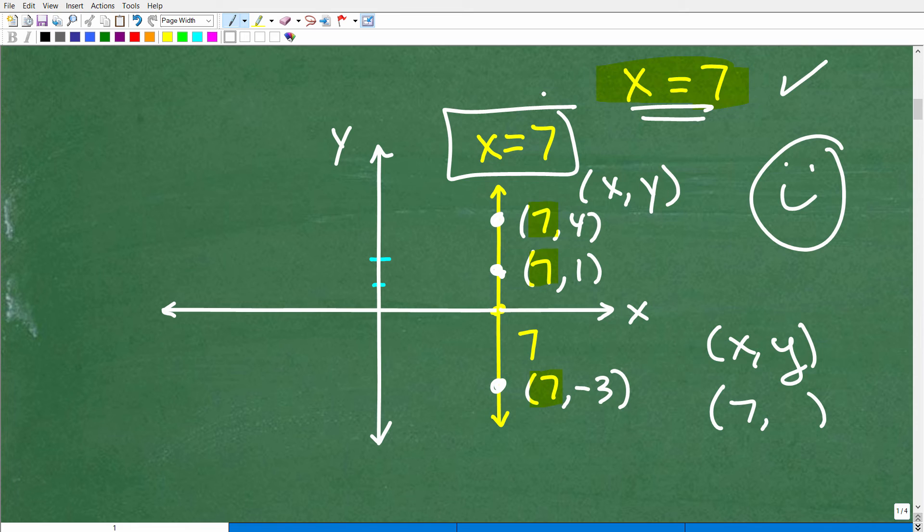But, again, these x equals, y equals lines here are easy to confuse. So let me ask you another question, okay, in contrast to our other line. Let's go ahead and put that back up. So y is equal to 2, what is the slope of y is equal to 2, and what is the slope of x is equal to 7?